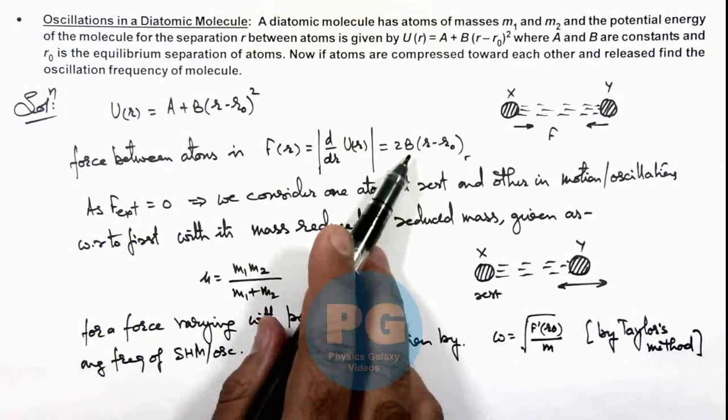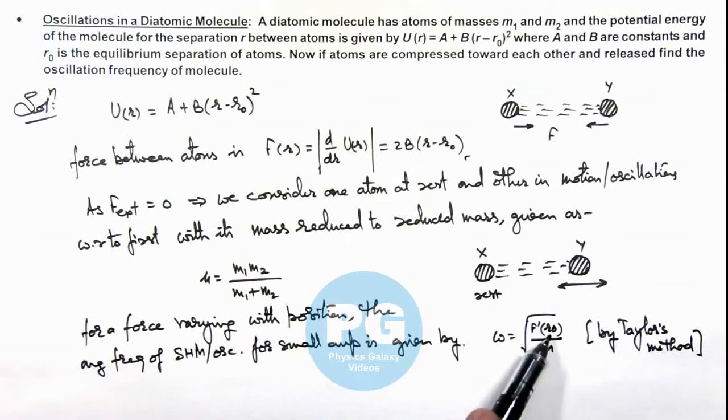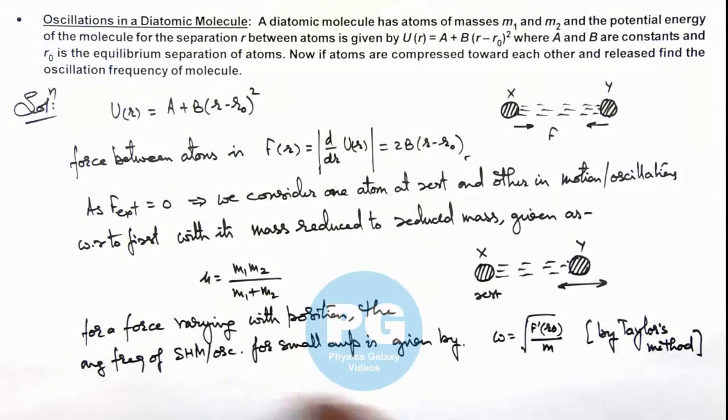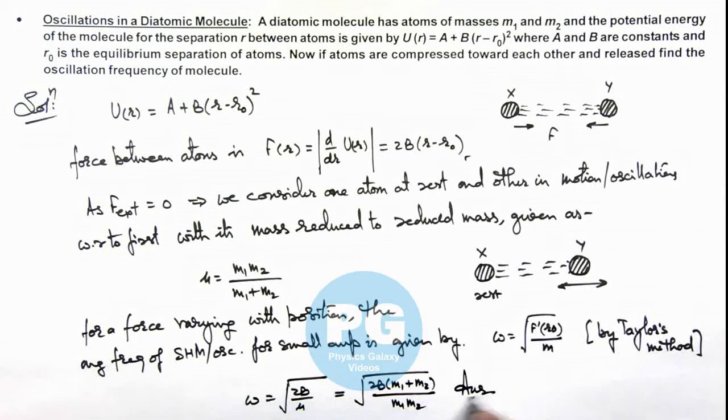The derivative of this expression at r equal to r₀, so this will be 2B only. So the angular frequency can be given as root of this value will be 2B divided by μ, which can be written as root of 2B multiplied by (m1 plus m2) divided by m1·m2. That will be the final result of this problem.